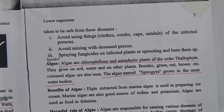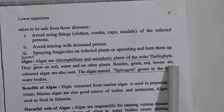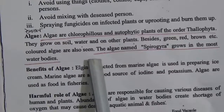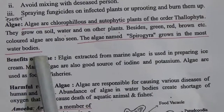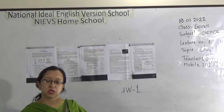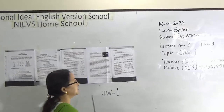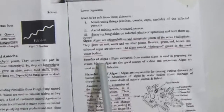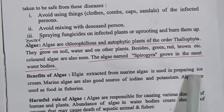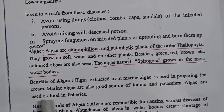Algae are chlorophyllous and autotrophic plants of the order Thallophyta. They grow on soil, water, and on other plants. Besides green, red, and brown algae, other colors are also seen. The algae named Spirogyra grows in most water bodies; we can see greenish growth in abandoned ponds where water is stagnant for many days — this is one kind of algae called Spirogyra. Agar extracted from marine algae is used in preparing ice cream; marine algae are also a good source of iodine and potassium. Algae are used as food in fisheries.